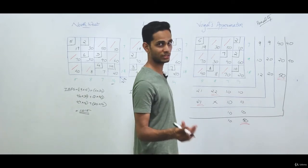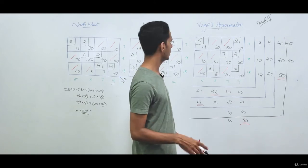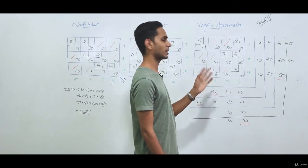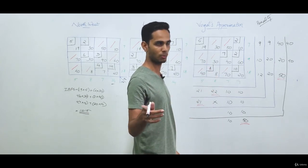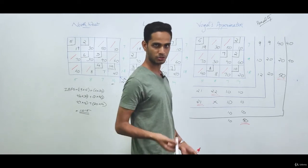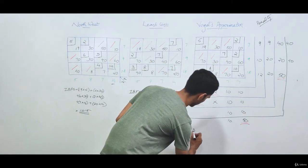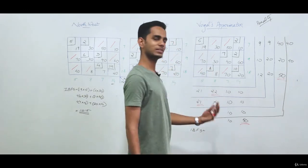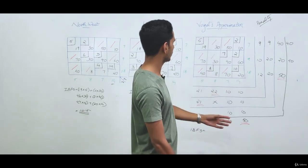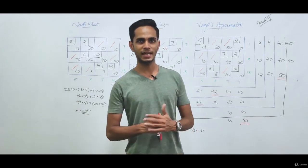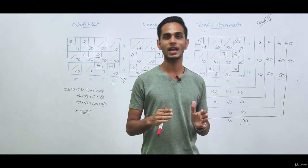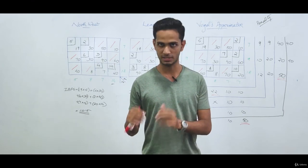To check degeneracy: m plus n minus 1 equals 3 plus 4 minus 1 equals 6, and the occupied cells are 1, 2, 3, 4, 5, 6 — no degeneracy. The initial basic feasible solution calculation is left as an exercise for viewers. In the next video, we'll find out how to do an optimality check, a balancing check, and handle a degenerate problem. Thank you.